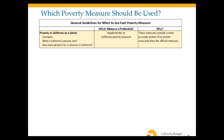For specific use case guidance: if you want to know California's overall poverty rate or how many people live in poverty in California, the supplemental or California poverty measure are preferable — they provide a more accurate picture of economic insecurity than the official measure.